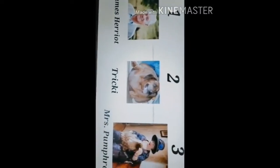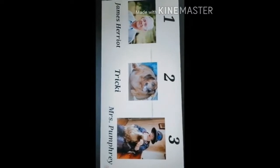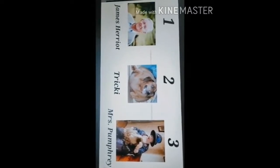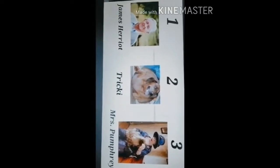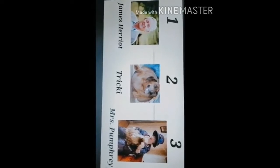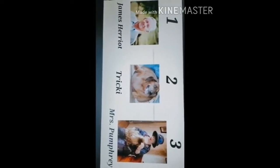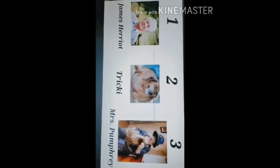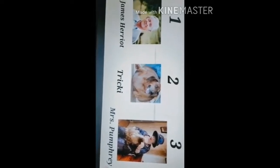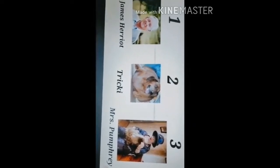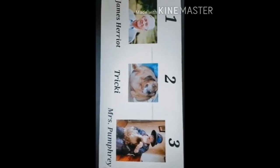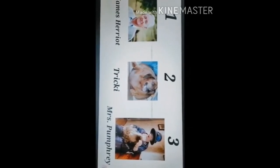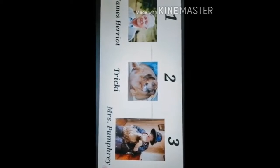Now you can see the three main characters. First one is James Herriot who is a veterinary surgeon. Second one is Tricky, the dog. Third one is Mrs. Pumphrey. Mrs. Pumphrey is the owner of Tricky. Tricky was the pet dog of Mrs. Pumphrey.